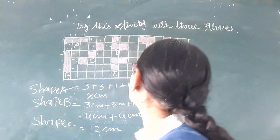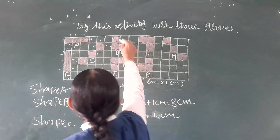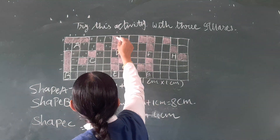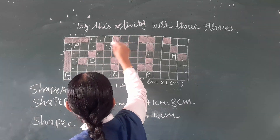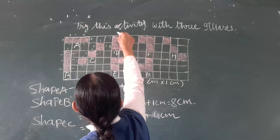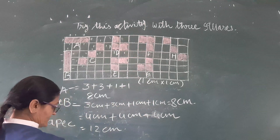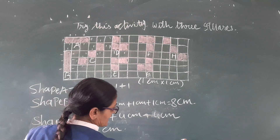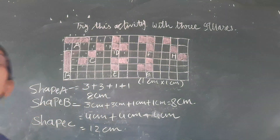Now again, for shape D. Shape D: counting the boundary — 1, 1, 1 means 3; then 1; here 1 and 1 is 2; here 1 and 1 is 2; here 1 and 1 is 2; and here 2. Means 6. So 2 cm plus 2 cm plus 2 cm plus 2 cm equals...